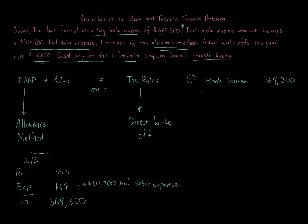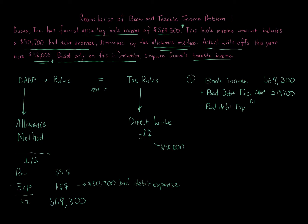We add back the bad debt expense for GAAP purposes — $50,700. Then, for tax, we use the direct write-off method. We're told actual write-offs during the year were $48,000, so we take a $48,000 deduction on the tax return — on Form 1120 for this corporation. We subtract away the $48,000 bad debt expense under the direct write-off method.